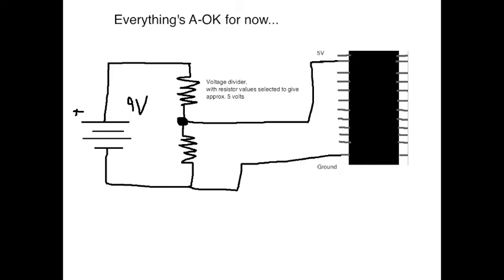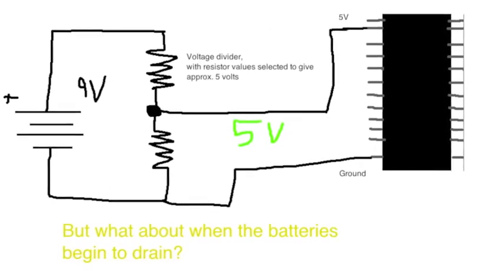First of all, the resistors themselves inherently limit the amount of current that a voltage divider can provide. Also, there's another problem, especially when running off of batteries.